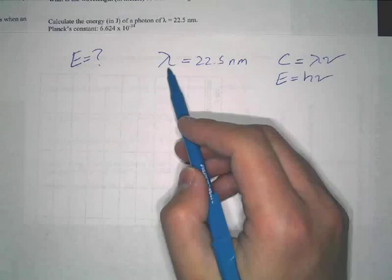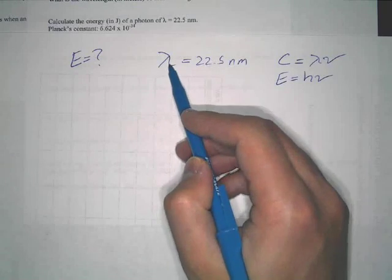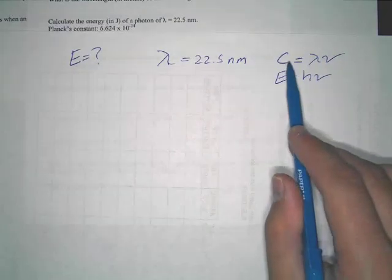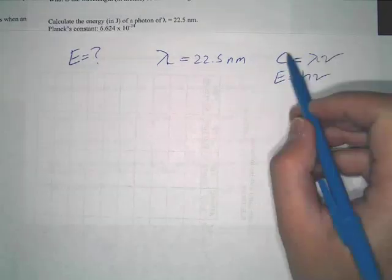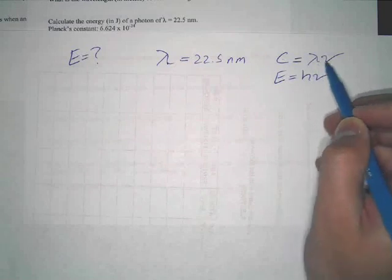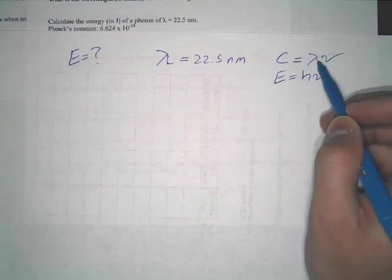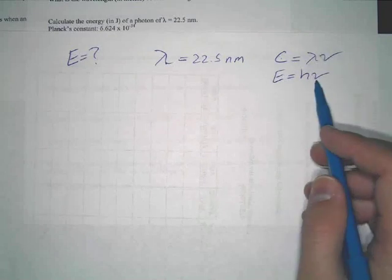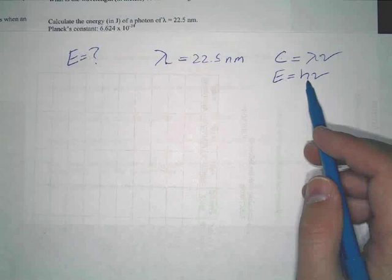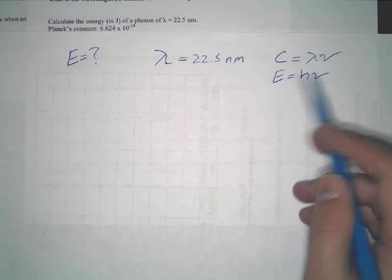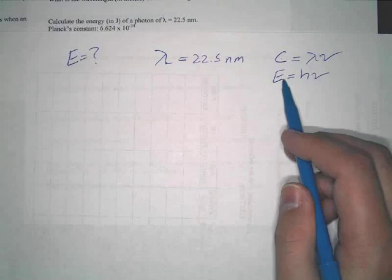Now if you've got wavelength, you have to remember first that C is a constant. So you've got two out of the three variables for this equation, so you can just solve for frequency. Once you solve for frequency, the next step is to plug it in here. Because, again, H is a constant. It's a given value always. So you can plug it in here. Then you've got two out of the three variables and you just solve for E.